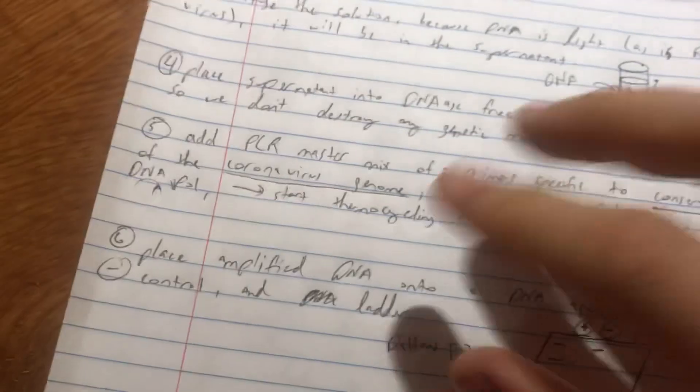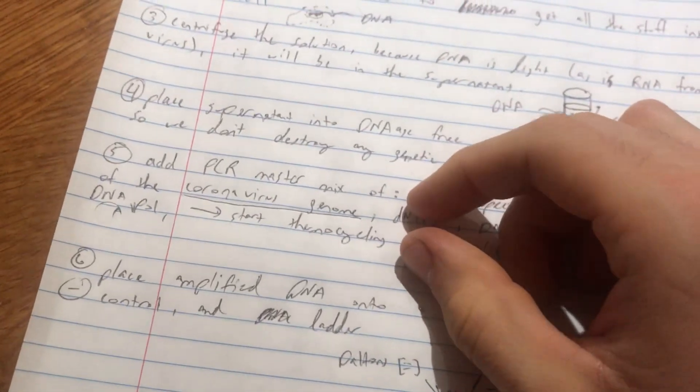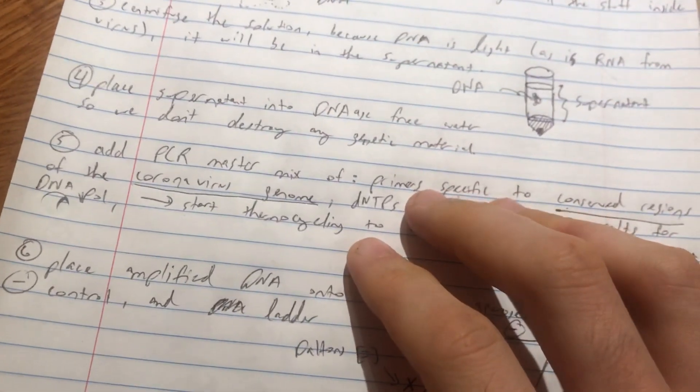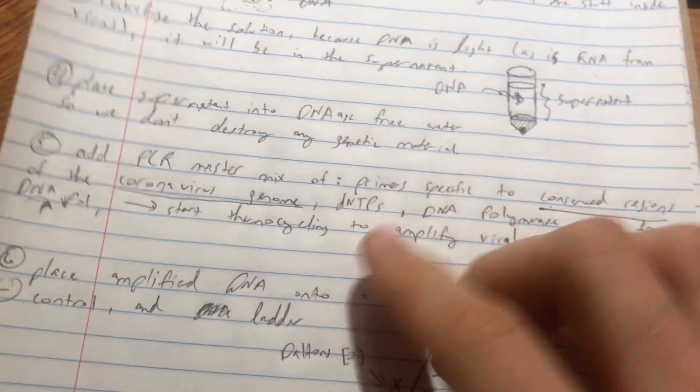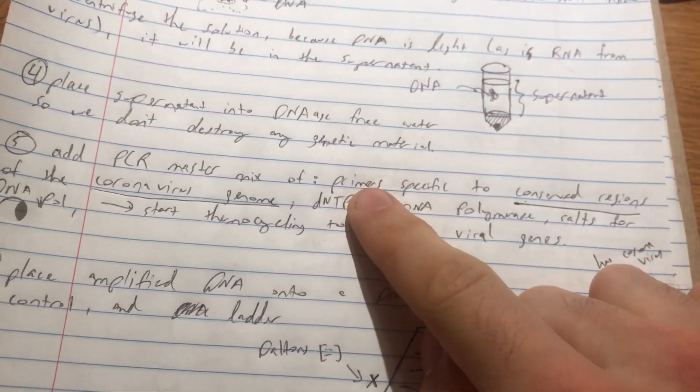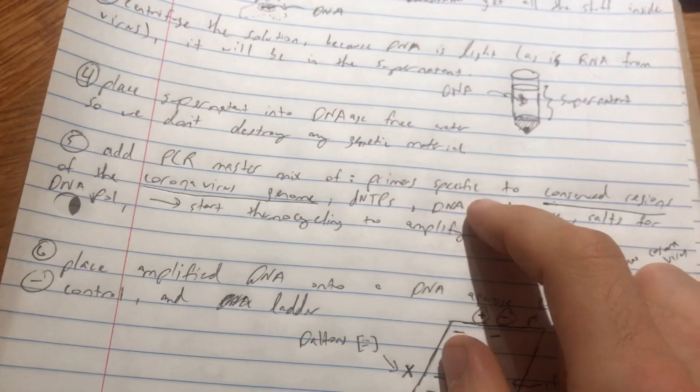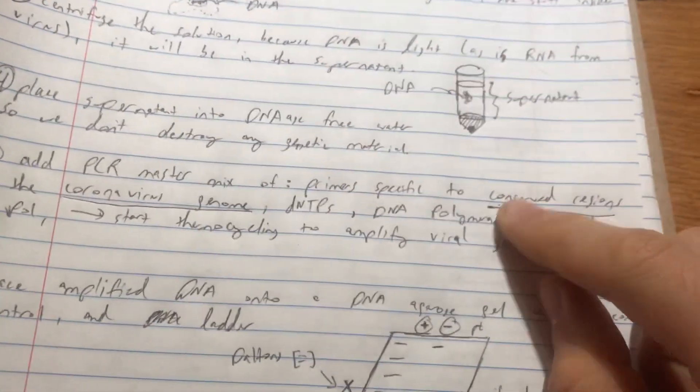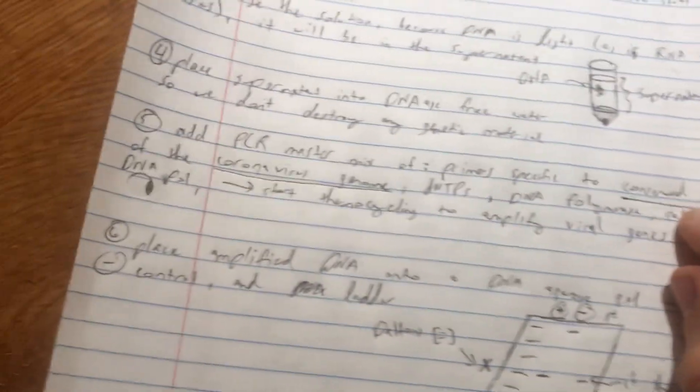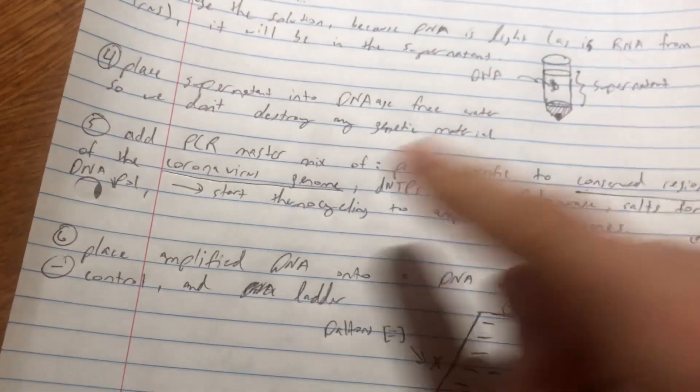And then we're going to start thermocycling. So this is just PCR. Don't worry about understanding all of the details if you're not quite familiar with it, but basically the point is that we have primers in the master mix, which comes in that test kit that comes from the government right now, that helps us identify those conserved regions of the coronavirus genome.